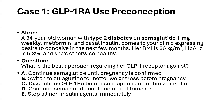The first case is surrounding GLP-1 receptor agonist use preconception. There is an increasing number of patients now using GLP-1 receptor agonists like semaglutide and also GLP-1/GIP receptor agonists like tirzepatide. A 34-year-old woman with type 2 diabetes is well established on semaglutide 1 mg weekly, metformin, and once-daily basal insulin. She is coming to clinic expressing the desire to conceive in the next few months. Her BMI is 36 kg/m², HbA1c is 6.8%, and she is otherwise healthy. What is the best approach regarding GLP-1 receptor agonist advice for her?